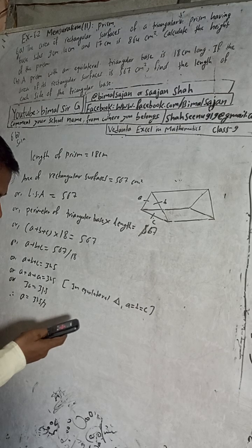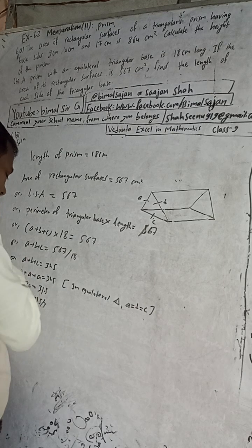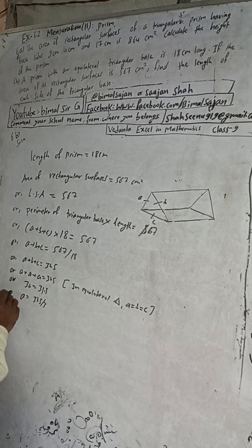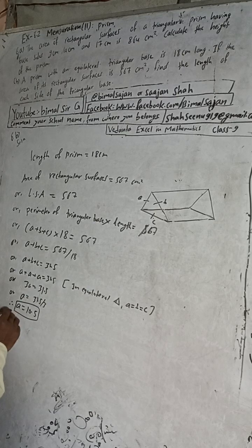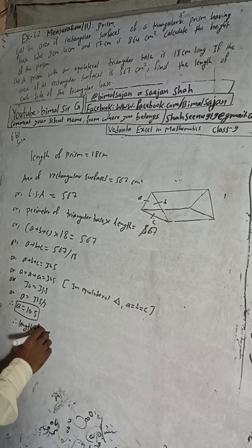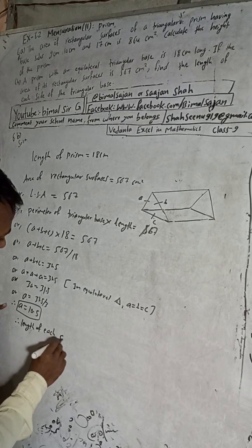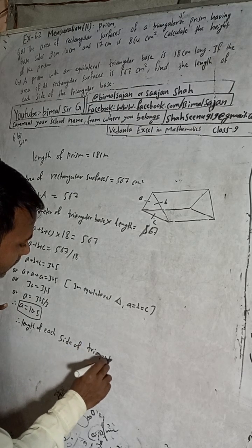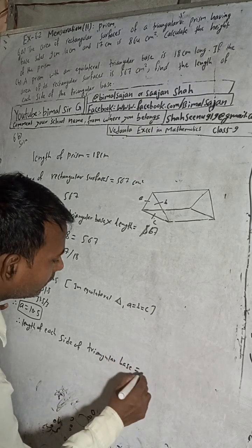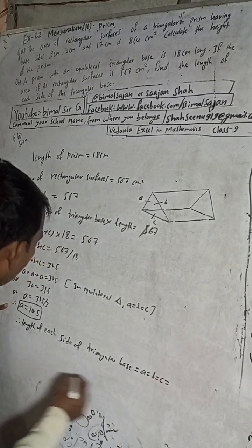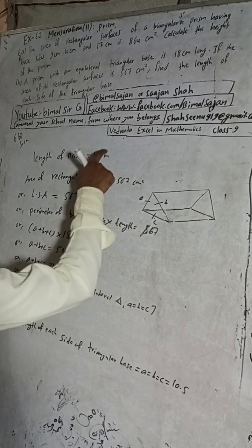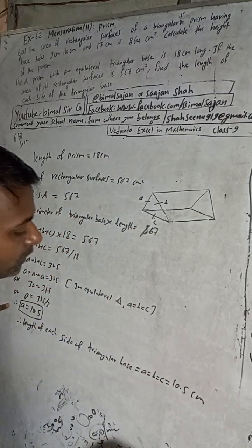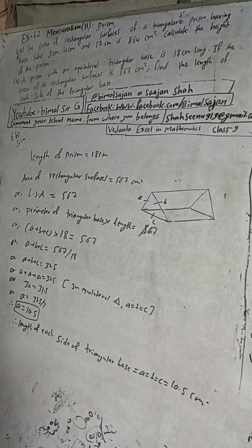Divided by 3 gives 10.5. So A = 10.5. The length of each side of the triangular base: A = B = C = 10.5 cm. The book answer is also 10.5 cm, so we got the book answer.